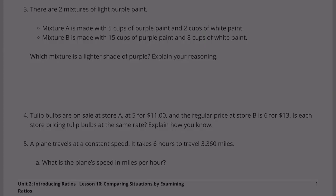Number 3, there are 2 mixtures of light purple paint. Mixture A is made with 5 cups of purple paint and 2 cups of white paint, 5 to 2. Mixture B is made with 15 cups of purple paint and 8 cups of white paint. Which mixture is a lighter shade of purple?